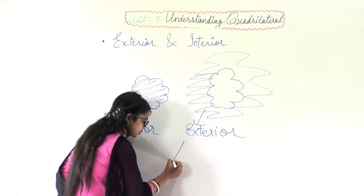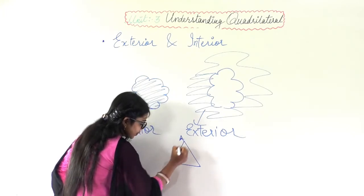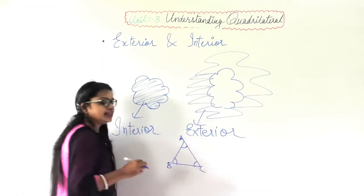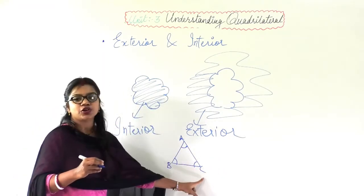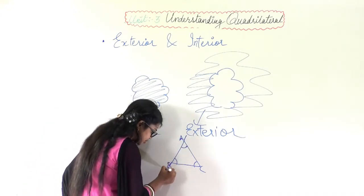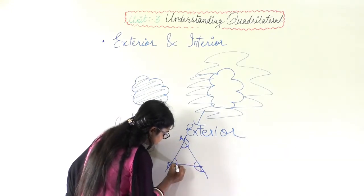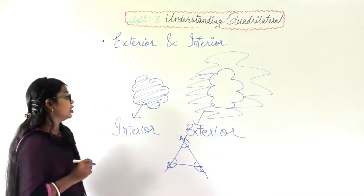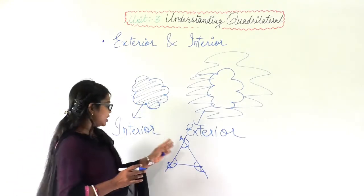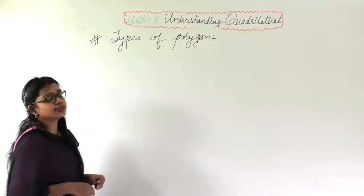Similarly, if I draw a triangle ABC with angles A, B, and C — these are the interior angles of the triangle. If I extend the sides of the triangle, the angles formed outside are the exterior angles. So we understand what interior angle and exterior angle mean.